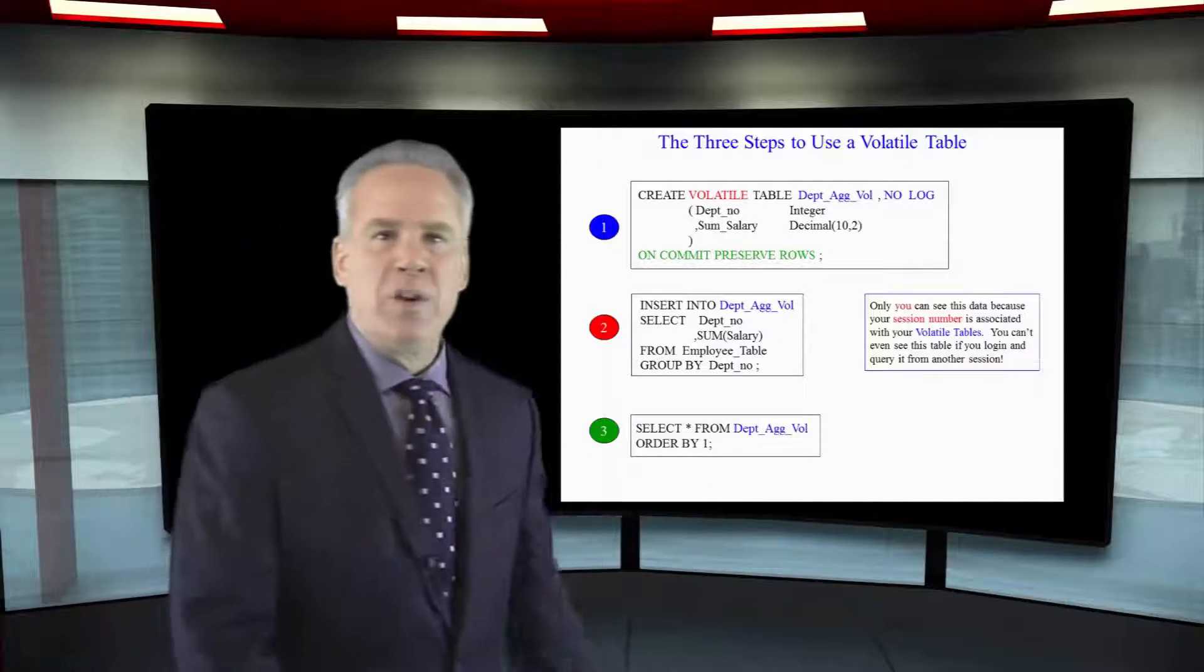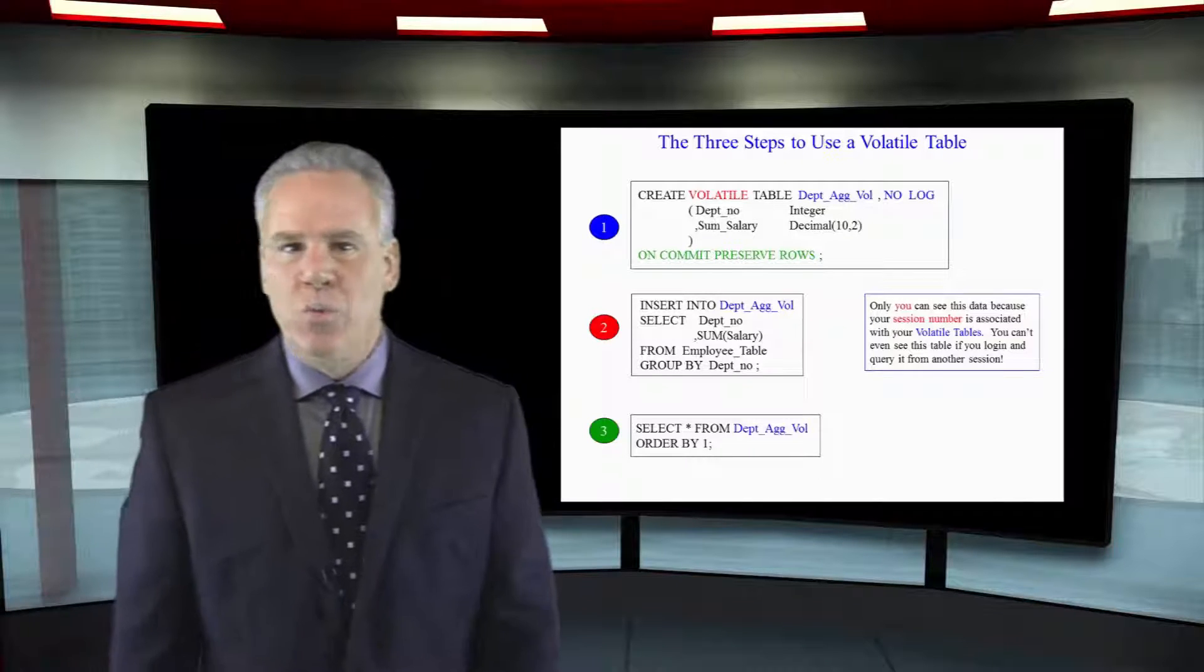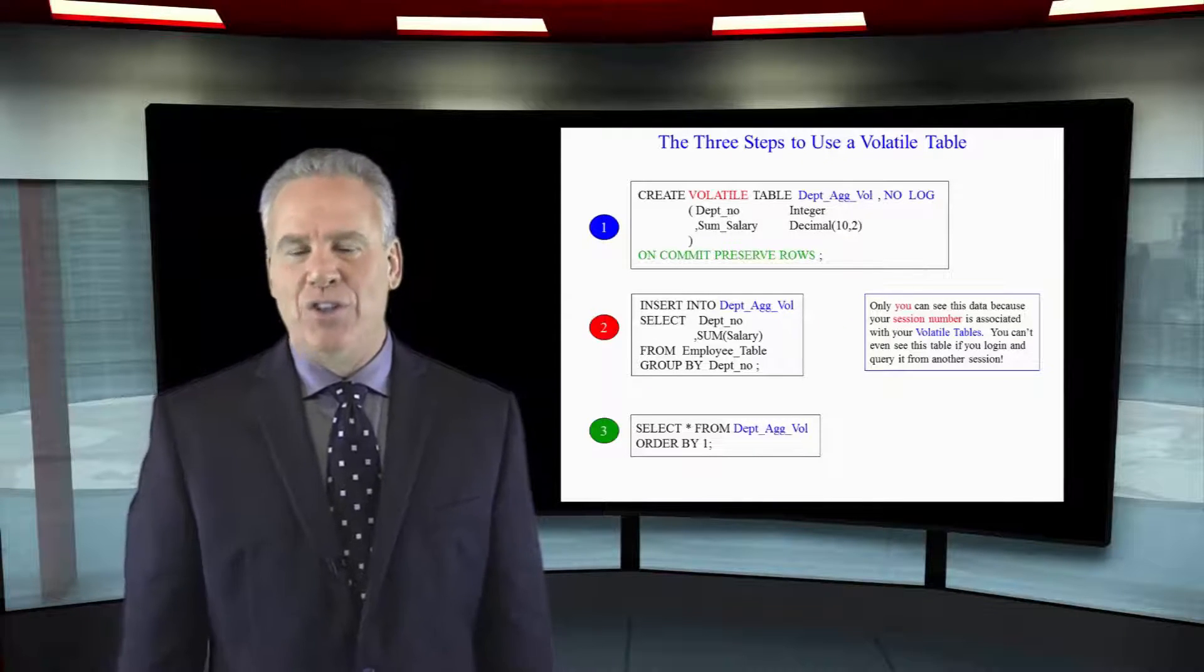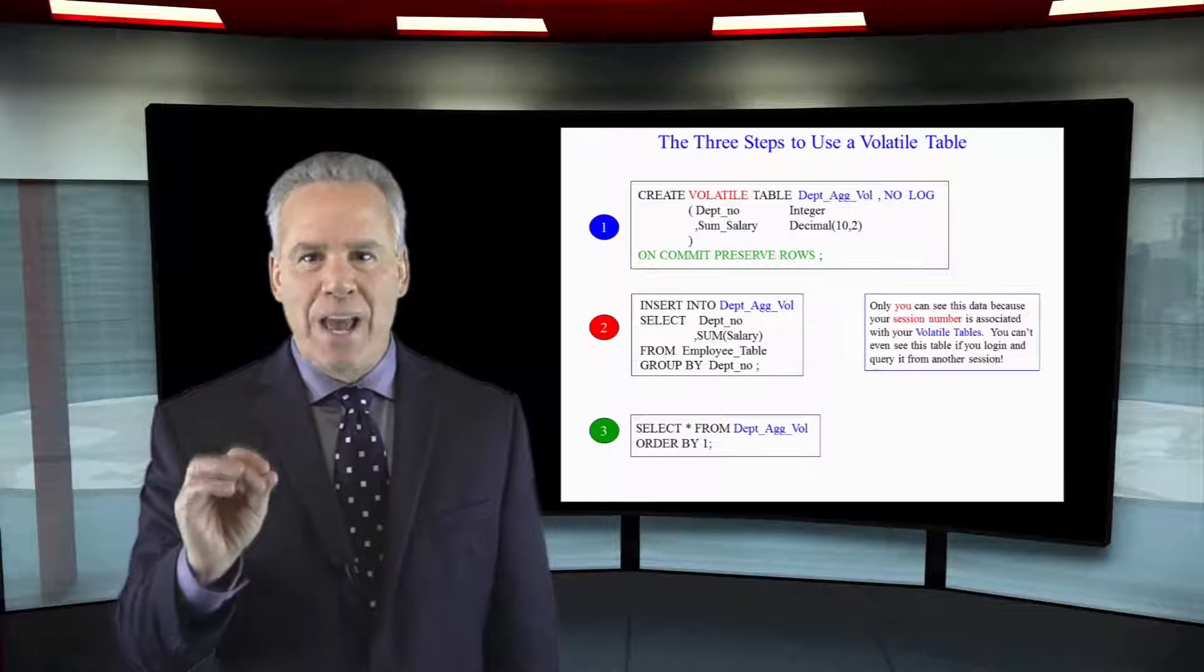And then lastly you're going to be able to query it as often as you want for the entire session until you log off. And then the table and the data go away. Now it populates your volatile table with spool space.